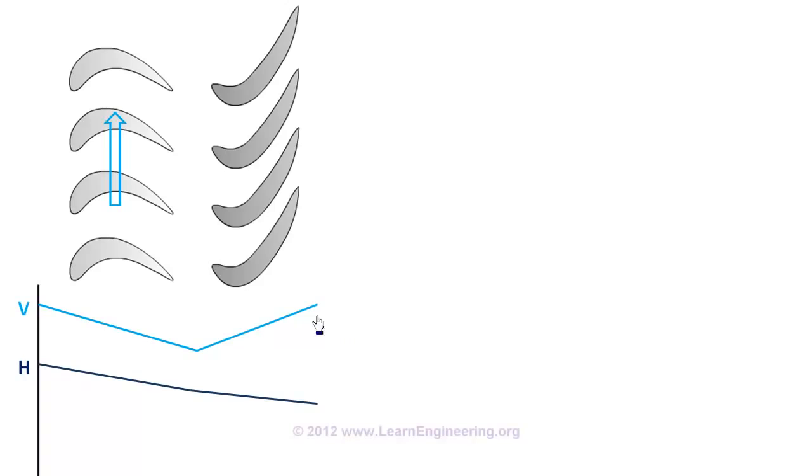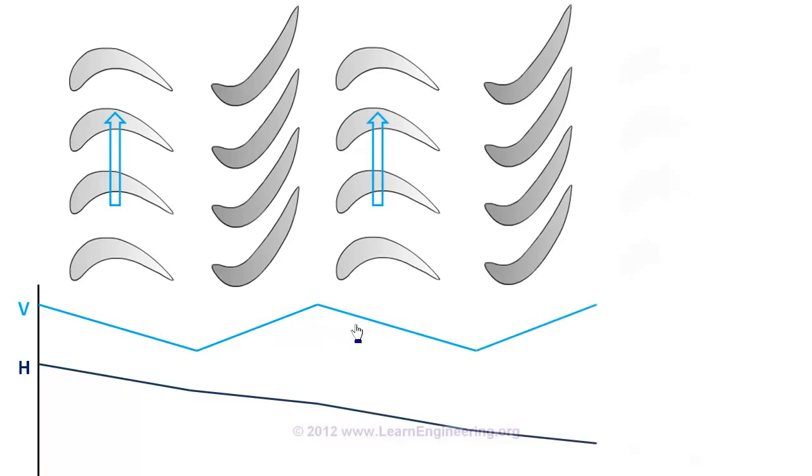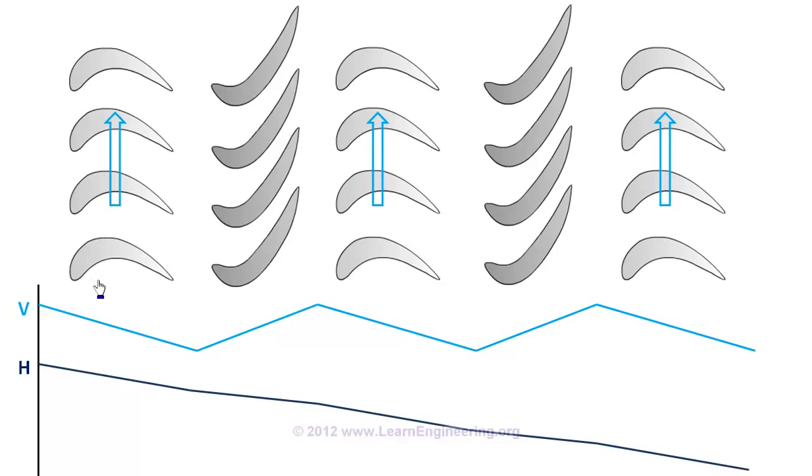Now we have increased velocity of fluid, so we can put next set of rotor. Again stator. And again rotor. So in a steam turbine there will be alternating sets of such rotors and stators. Rotors which are moving attached to the hub. Stators which are stationary, attached to the casing of turbine.